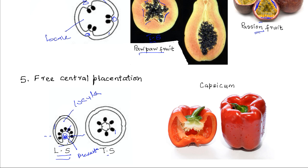Several seeds or ovules are attached to the placenta. A good example is the capsicum fruit — here is the placenta and the seeds attached to it within the single locule.